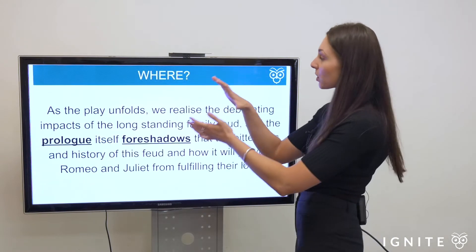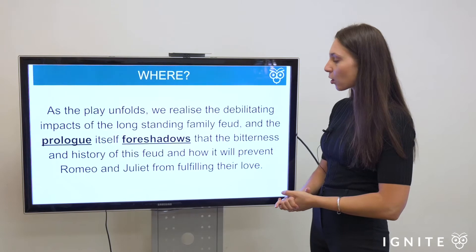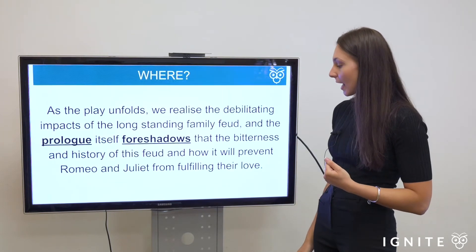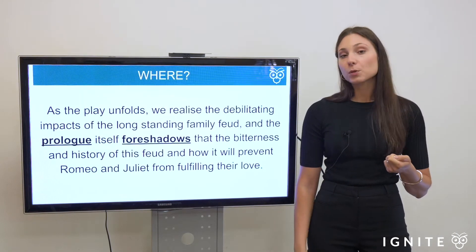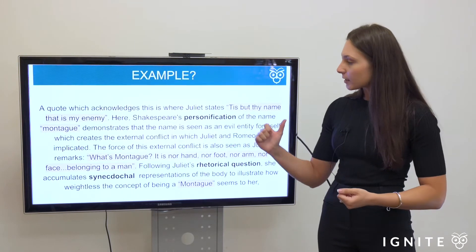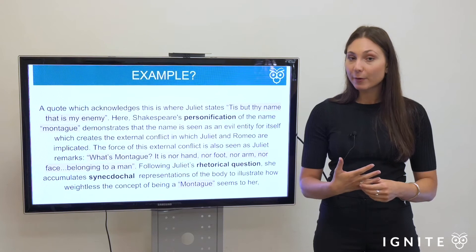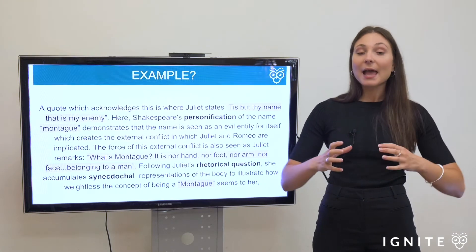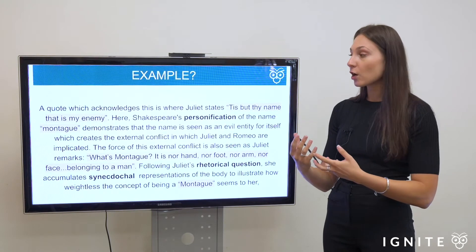Let's look at textual evidence that supports conflict as a key idea. As the play unfolds, we realize the debilitating impacts of the long-standing family feud. The prologue itself foreshadows the bitterness and history of this feud, and how it will prevent Romeo and Juliet from fulfilling their love — the extent of it is too much to overcome. I've highlighted the quotes and bolded the techniques, so students who struggle with unpacking textual evidence can see how to identify techniques and build analysis. You'd begin with a topic sentence introducing the idea of conflict before segueing into the analysis.